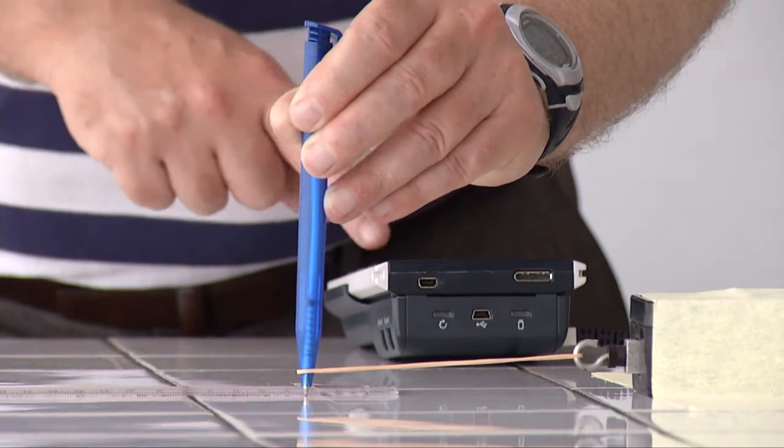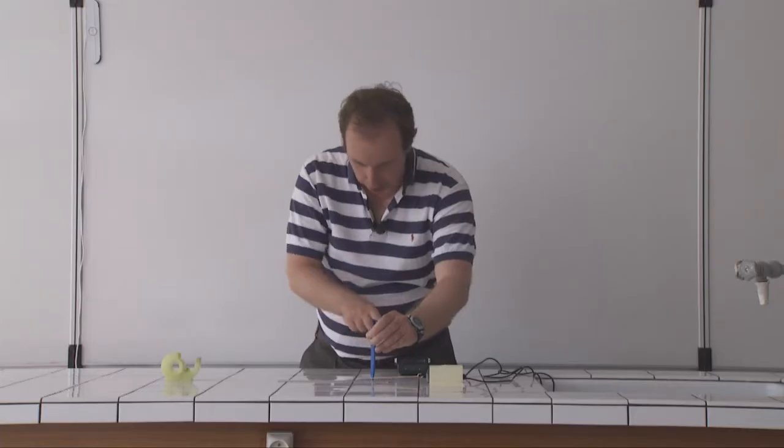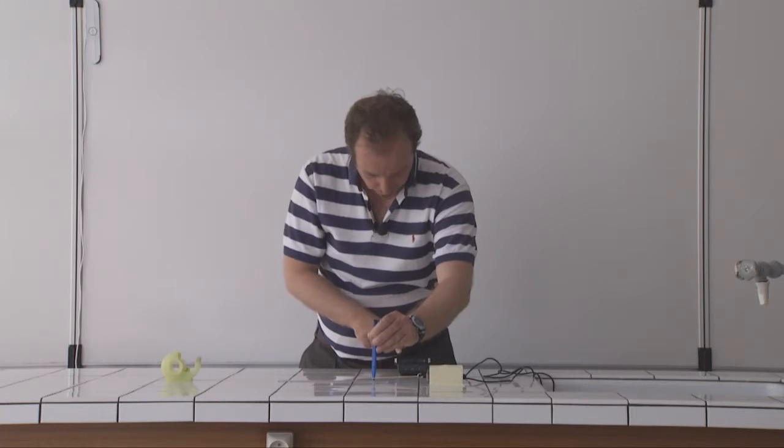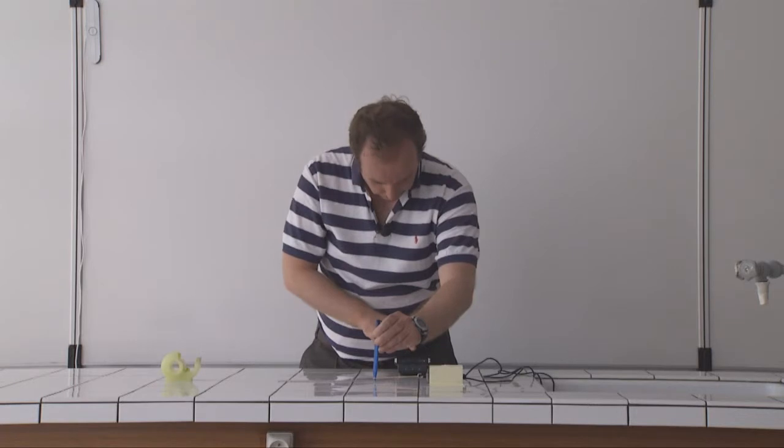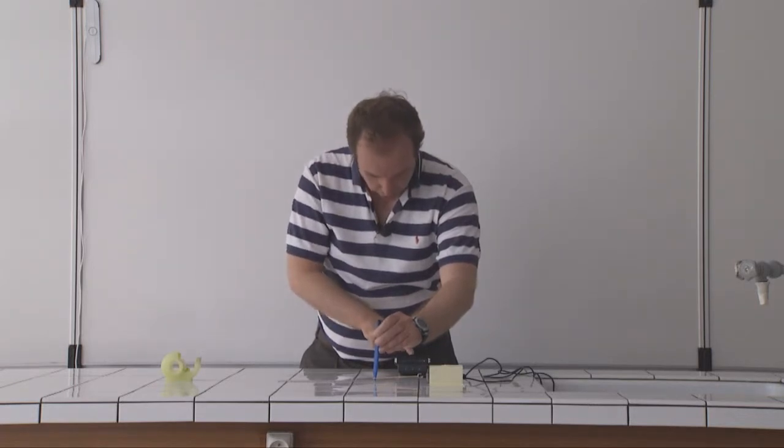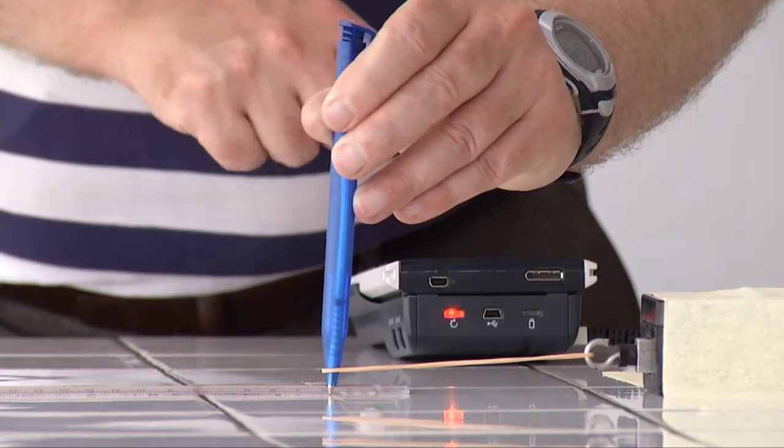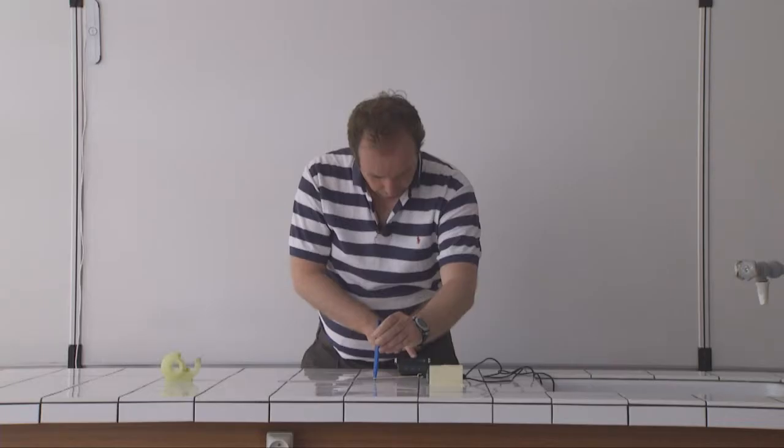In the box that comes up, we need to type the unit that we're going to measure along the x-axis, which is the extension. The units are going to be in centimeters. Once we've done that, we just OK that and then press Start.